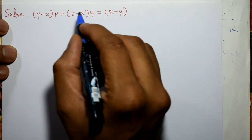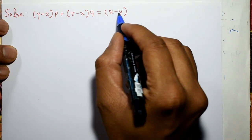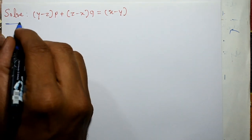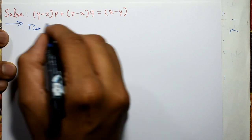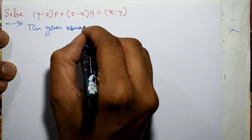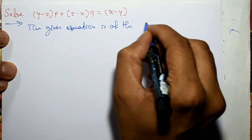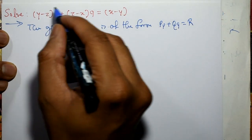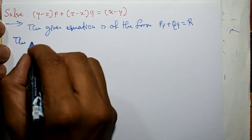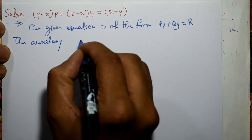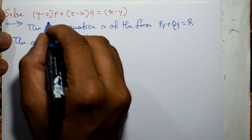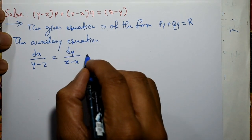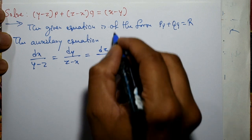Solve (y minus z)p plus (z minus x)q equal to (x minus y). Find the general solution of Lagrange's linear PDE. The given equation is of the form Pp plus Qq equal to R, where capital P is (y minus z), capital Q is (z minus x), and capital R is (x minus y). The auxiliary equation is dx over P, that is (y minus z), equal to dy over Q, that is (z minus x), equal to dz over R, that is (x minus y). Call this equation number 1.